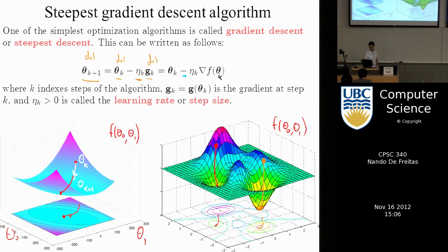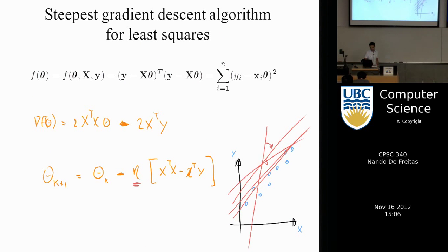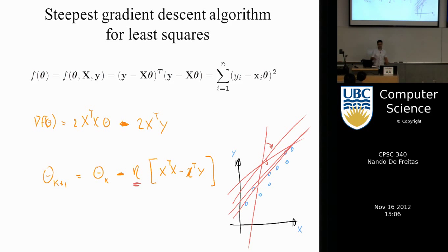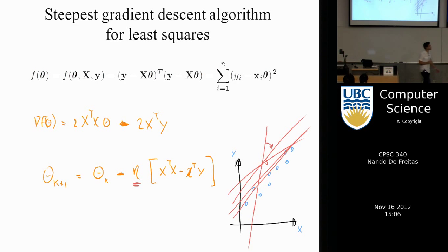The step size determines how fast you're going down. Then we looked at an example with the linear model: doing gradient descent is just a process of moving from one line to another. You start with a particular slope and then keep updating that slope until it fits — until the line goes through the data points.